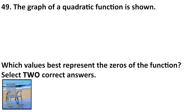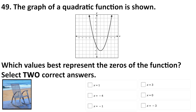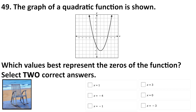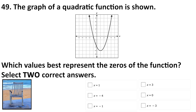Number 49 says the graph of a quadratic function is shown — which values best represent the zeros of the function? To identify a zero of any graph, whether it be linear, quadratic, or otherwise, all you got to do is take a look at the x-intercepts, which are where the graph crosses this horizontal axis right here.